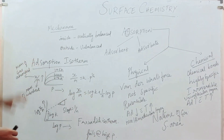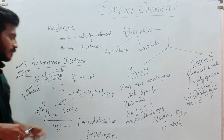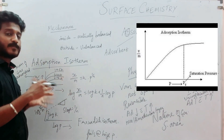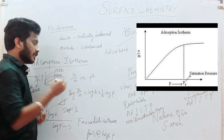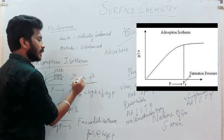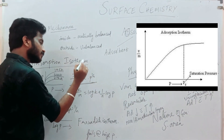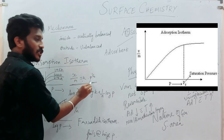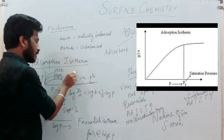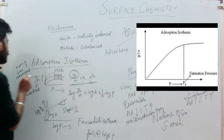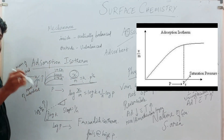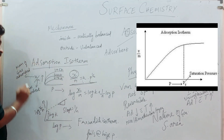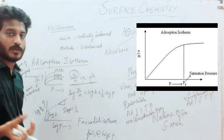Next, we will talk about adsorption isotherm. In adsorption, we plot a mathematical expression. That is: x by m is equal to k into p to the power of 1 by n. Here, p is pressure, k is a constant, x is the mass of adsorbate, and m is the mass of adsorbent.